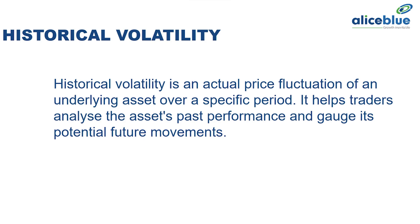In option trading, there are two types of volatility to consider: historical volatility and implied volatility. Historical volatility is the actual price fluctuation of an underlying asset over a specific period. It helps traders analyze the asset's past performance and gauge its potential future movement.